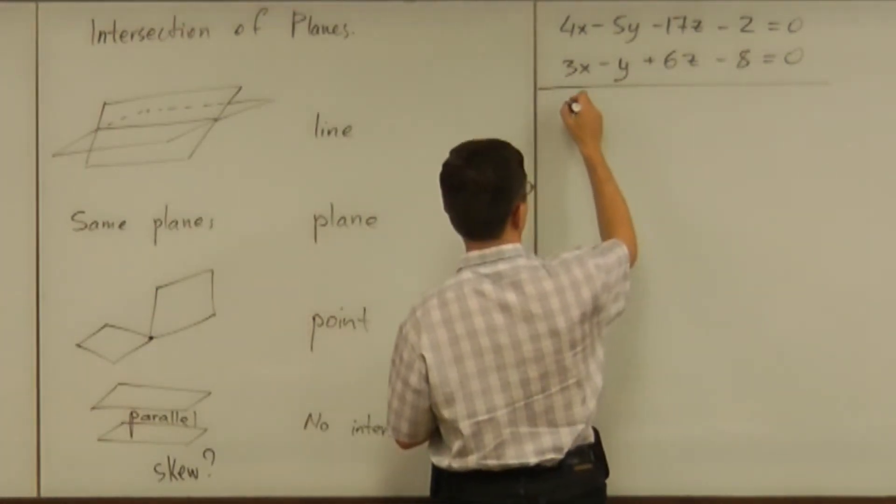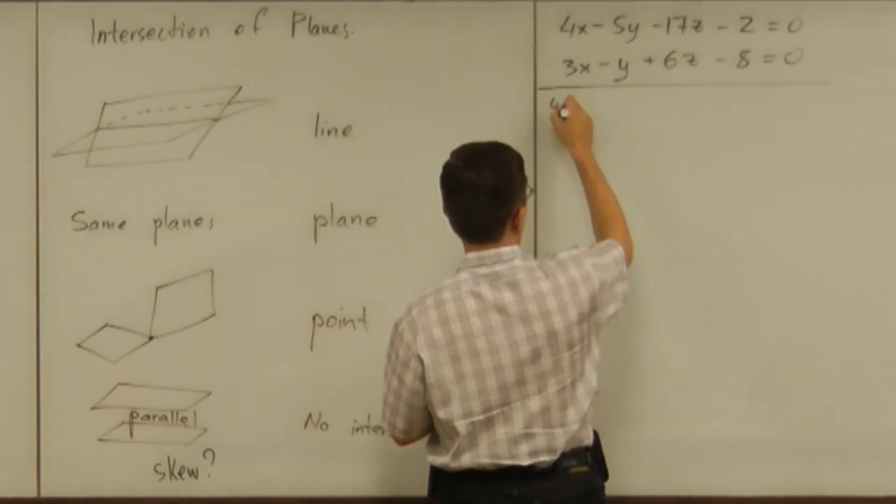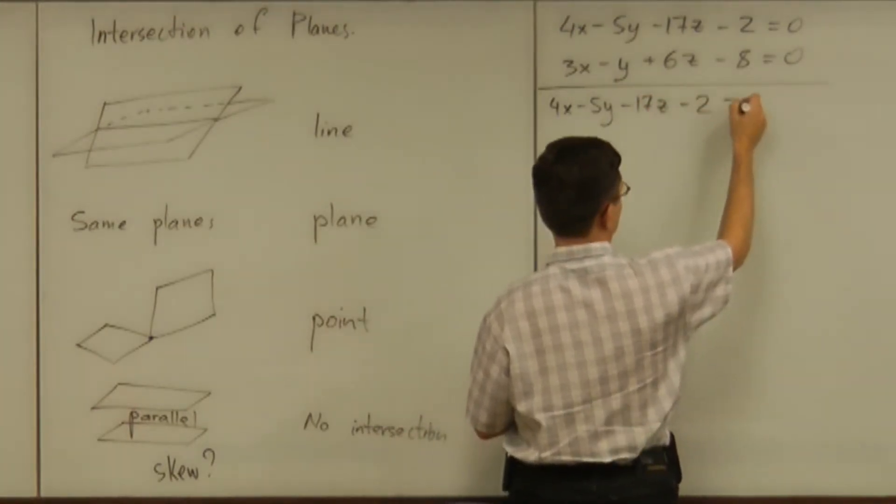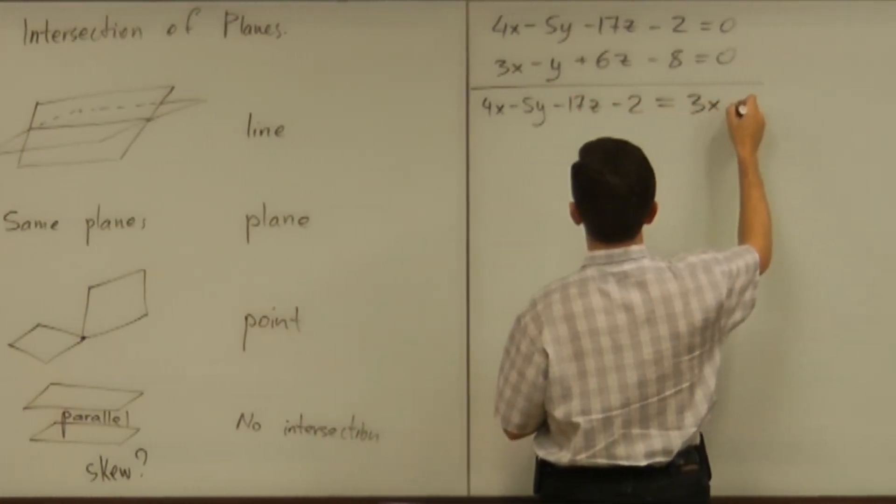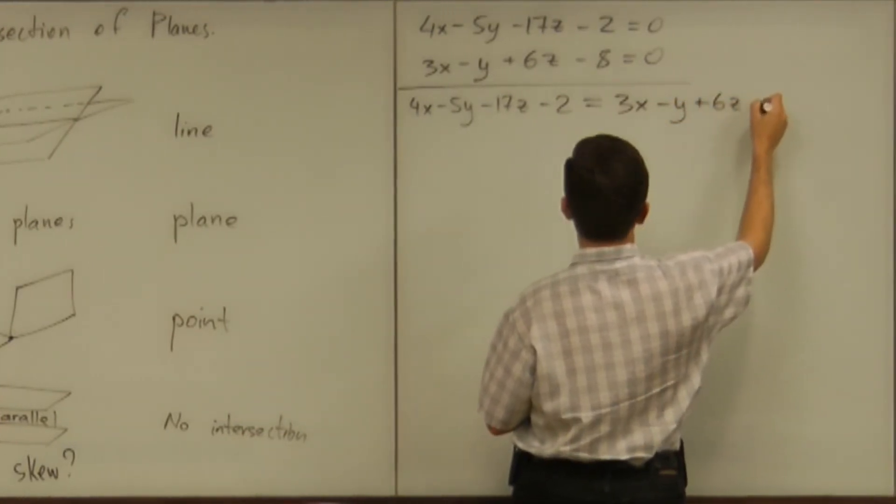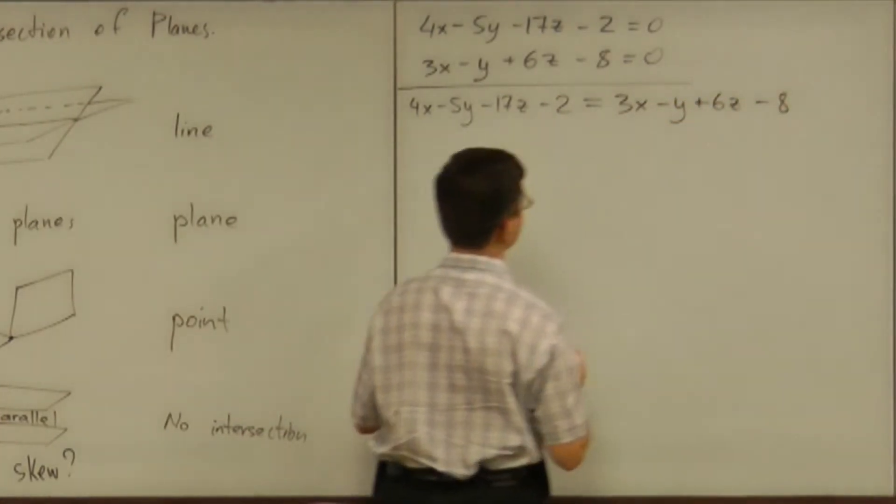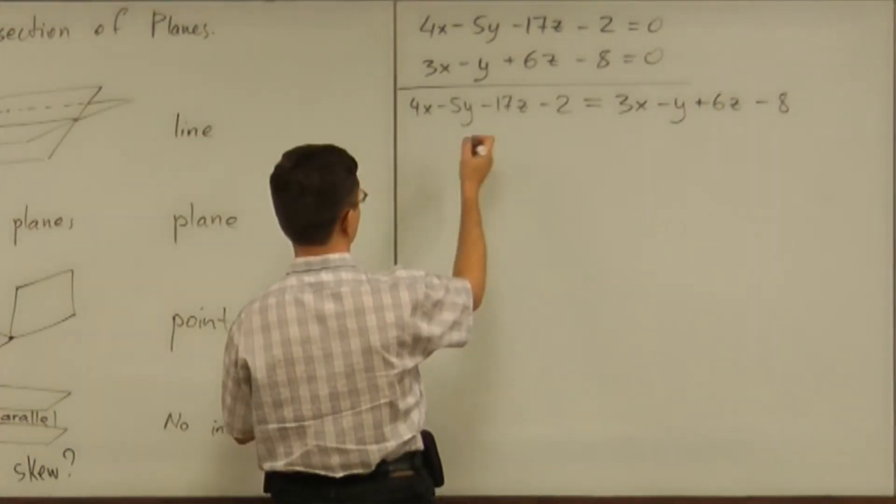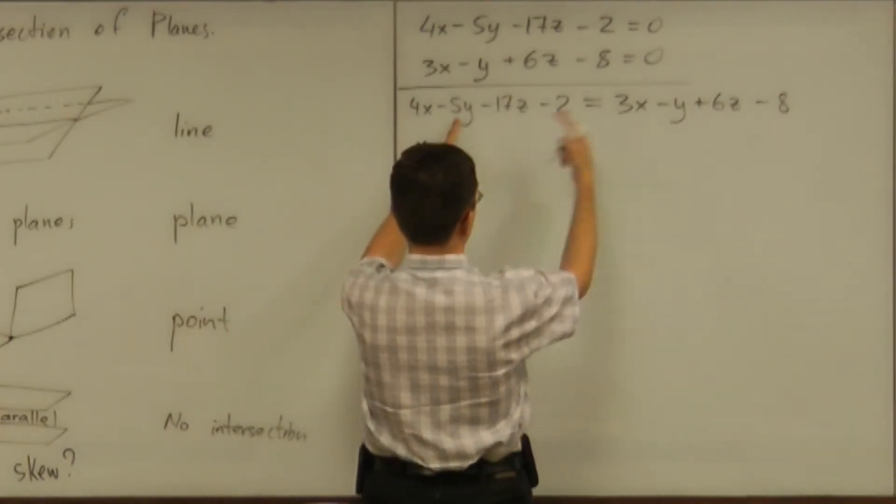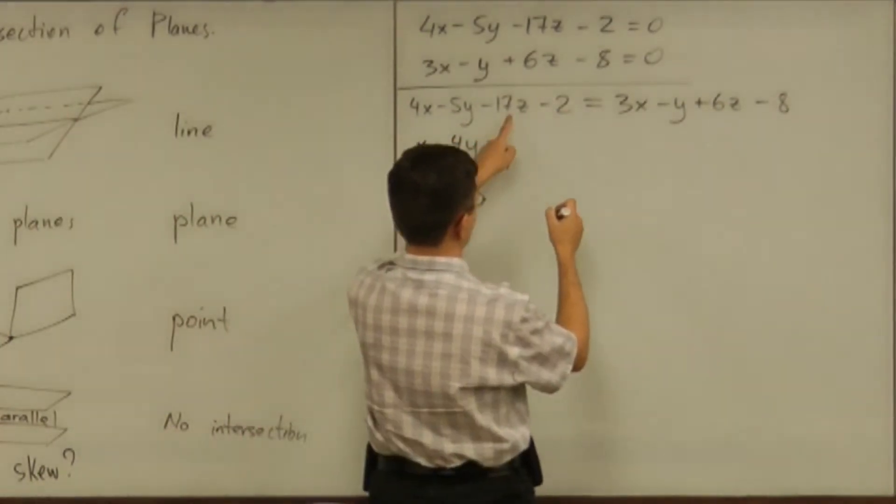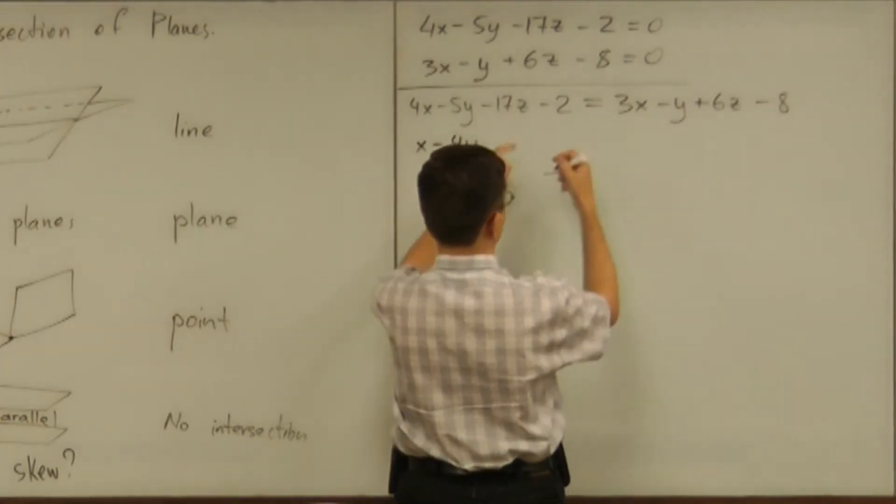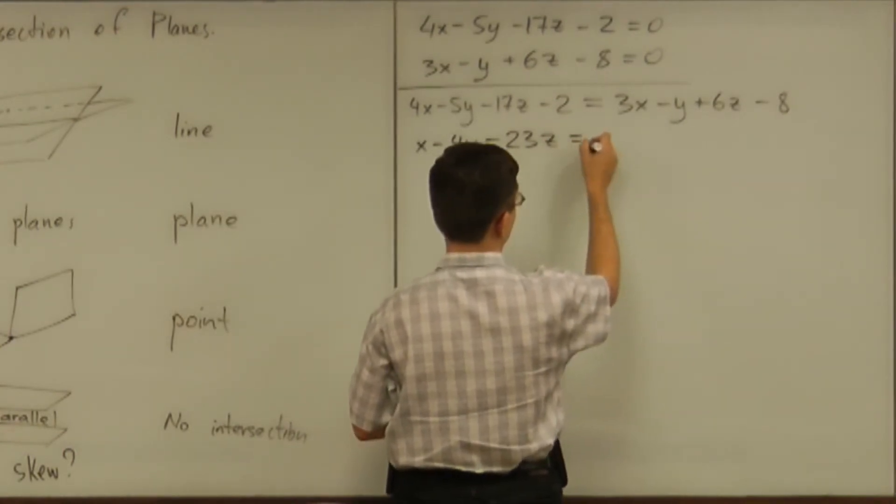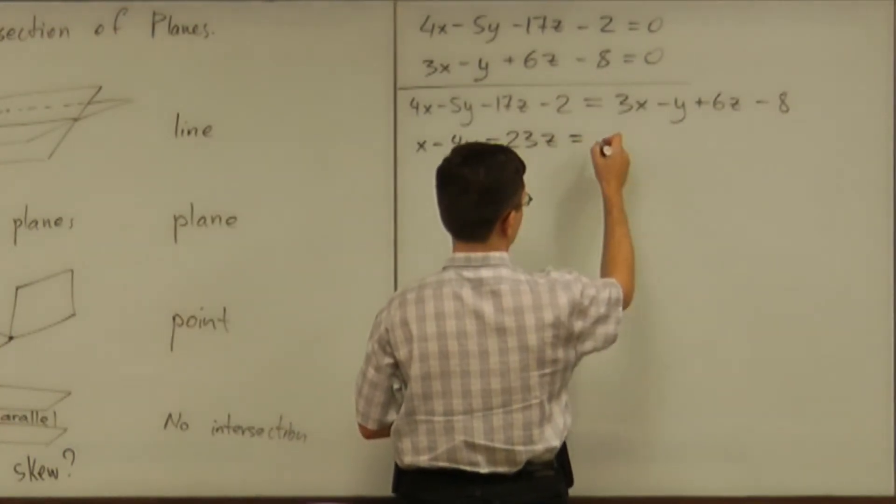Okay, so then, four x minus five y minus seventeen z minus two should be equal to three x minus y plus six z minus eight. And then I guess we simplify. Now do you want to simplify? X minus four y minus twenty-three z equals minus six.